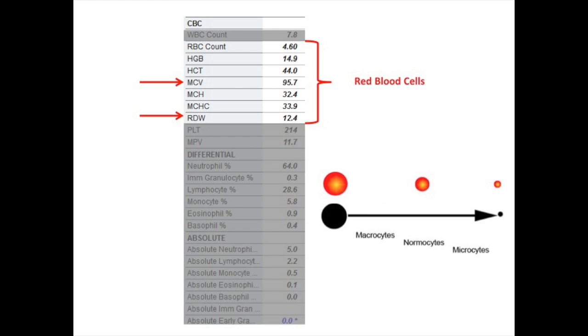If your MCV is low, this may be an indication of iron deficiency. The RDW is a measure of how differently shaped all of your red blood cells are. If this number is high, it may indicate that you have multiple reasons for anemia.